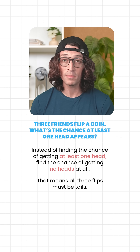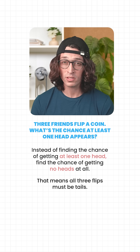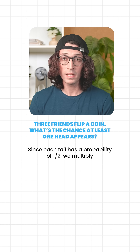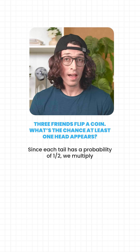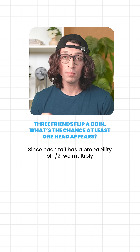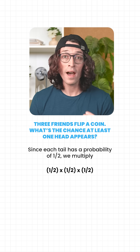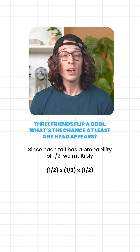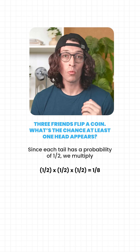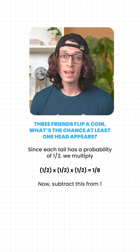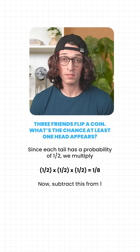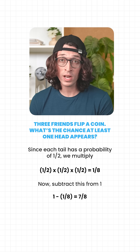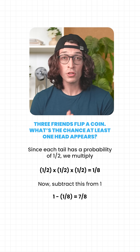That means all three flips must be tails. Since each tail has a probability of one half, we multiply one half times one half times one half, which equals one eighth. Now subtract this from one.